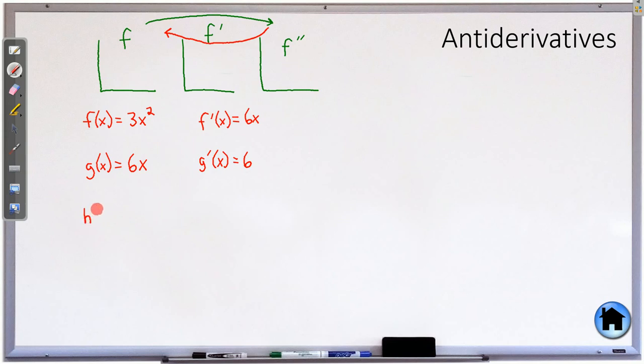And let's throw a trig function in there. Sine of x, and the derivative would be cosine of x. And so we are going to focus on how can we go backwards now?